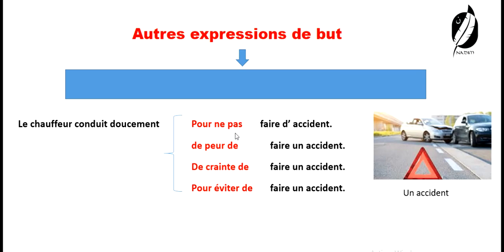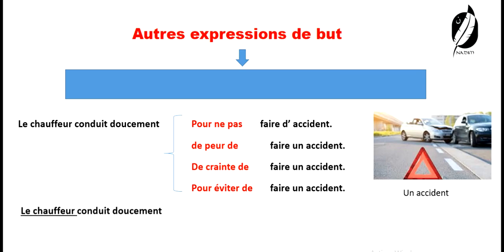À la fin de ces expressions, il y a des prépositions : pour de, de, de. Pourquoi l'utilisation des prépositions ? Parce qu'on a le même sujet. Le chauffeur conduit doucement — qui conduit doucement ? C'est le chauffeur. Faire d'accident — qui ? C'est le chauffeur. On a le même sujet. Quand on a deux sujets différents, à la place de « peur de », on utilise « de peur que ». Et à la place de « crainte de », on utilise « de crainte que ».